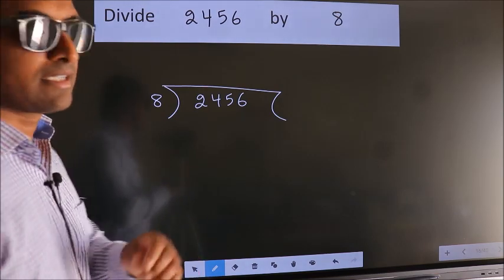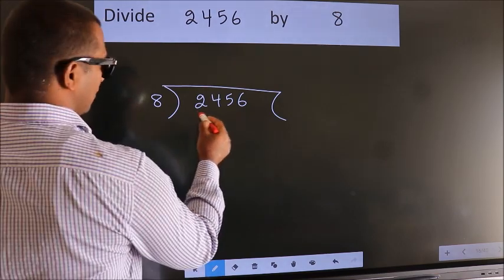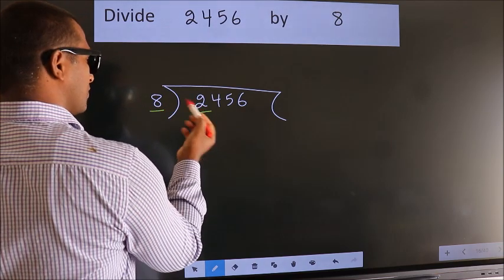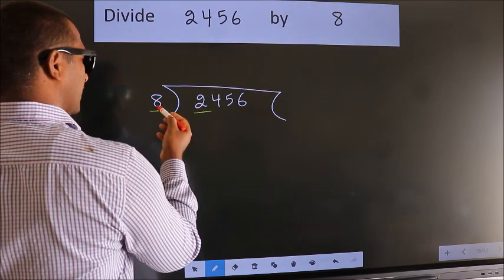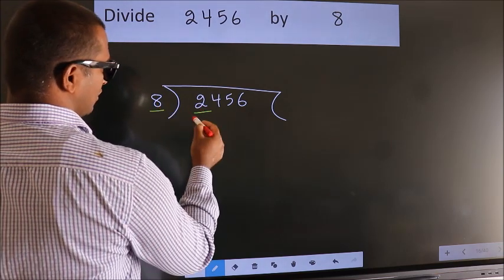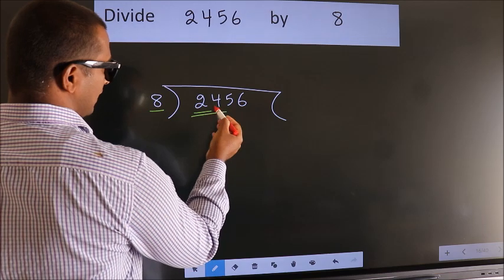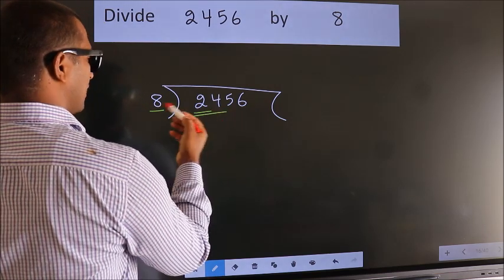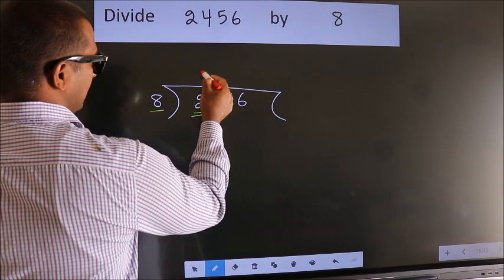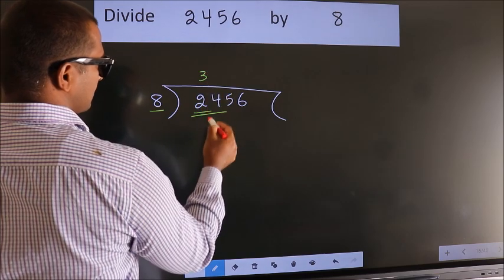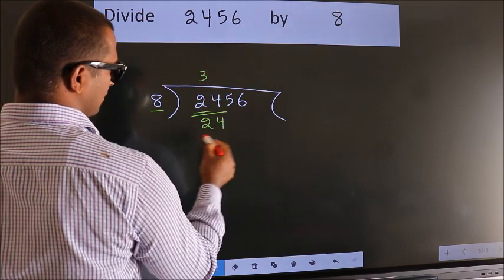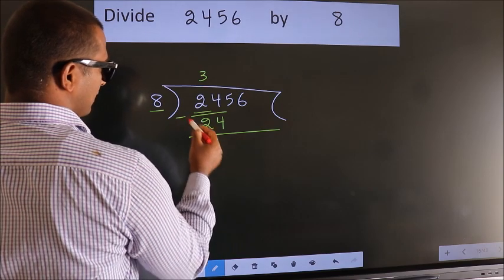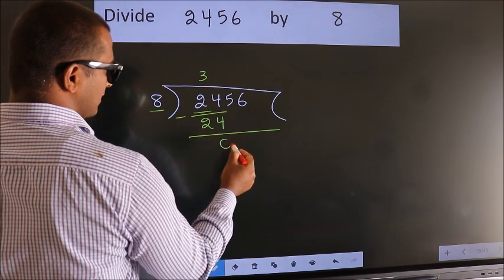Next, here we have 2 and here 8. 2 is smaller than 8, so we should take 2 numbers: 24. When do we get 24 in the 8 table? 8 threes are 24. Now we should subtract — we get 0.